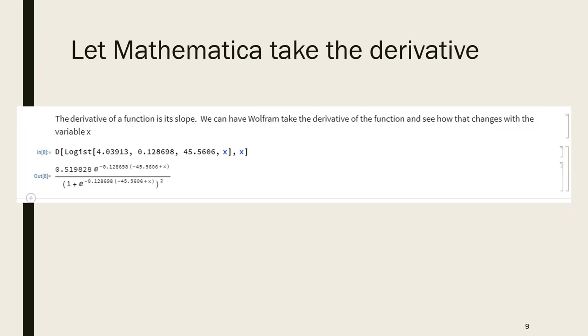Here we're showing a little bit more of what Wolfram Cloud/Mathematica can do - it can take a derivative. A derivative is the slope, how the function is changing. You can get Mathematica to take a derivative by using the method capital D. We're taking the derivative of our logist function with our specific parameters and X as a variable. Taking that second X means we're taking the derivative with respect to X. Out 8 is that derivative of the logistic function.